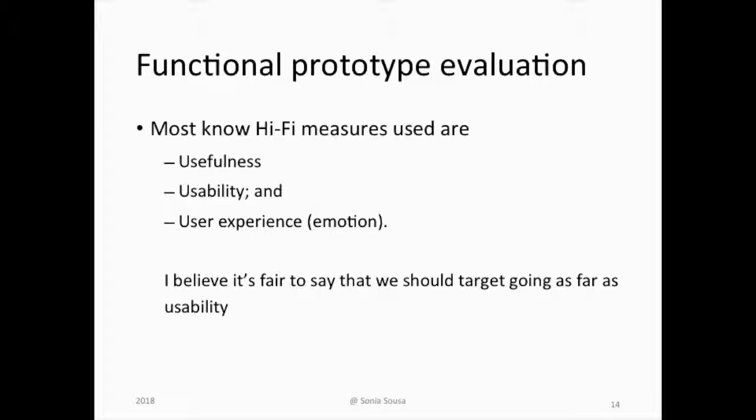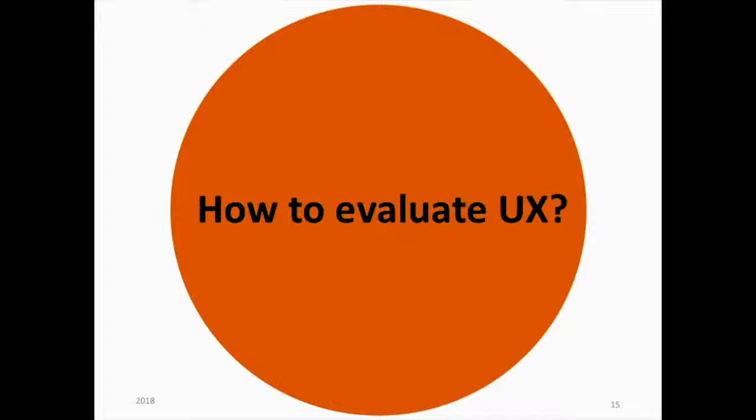Most high fidelity measurements are basically usability metrics. We look for the usefulness of the product, usability, how efficient it is, how effective it is, how satisfactory it is for the user. And we also look for emotions in the user experience — what emotion the user experiences when using a certain product.